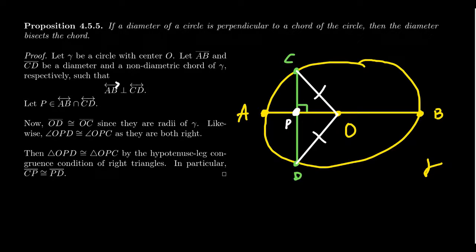As corresponding parts of congruent triangles are congruent, segment CP is congruent to segment DP, which tells us P is the midpoint of CD. Therefore line AB, being perpendicular to CD and passing through its midpoint, is the perpendicular bisector of chord CD.